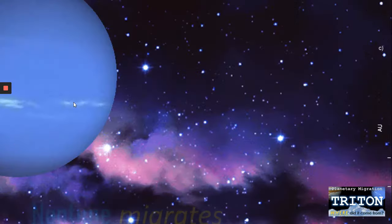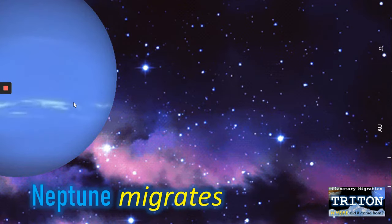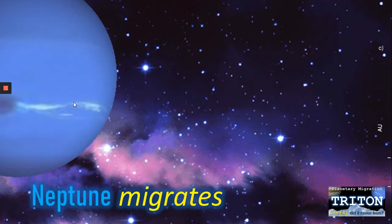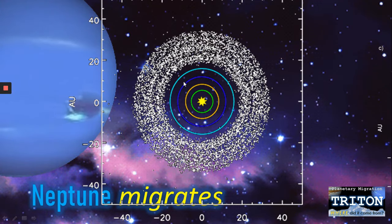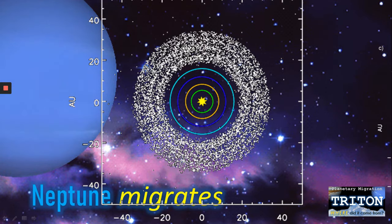First of all, we probably need to understand a little bit about planetary migration and the fact that we believe Neptune may have migrated out to the distance it is today. In the early solar system, we can see here the four gas giants formed in circular orbits, with a Kuiper Belt of objects that was much closer in.